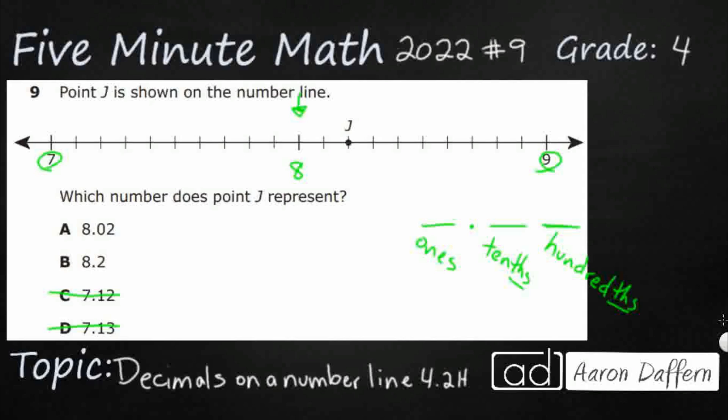Let's see how many spaces there are between 8 and 9. We're going to count the spaces — think of it like a fraction and you're counting how many pieces a shape is broken up into. I've got a line between 8 and 9 that is broken up into pieces. Let's count: 1 piece, 2, 3, 4, 5, 6, 7, 8, 9, 10 pieces.